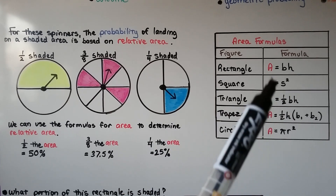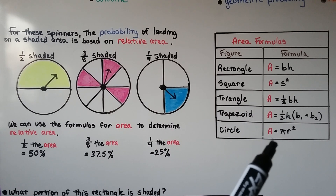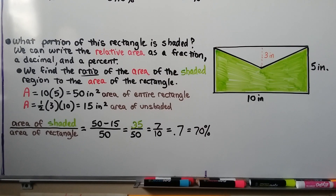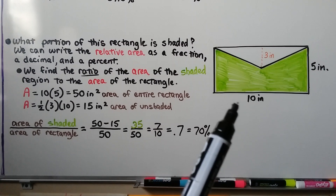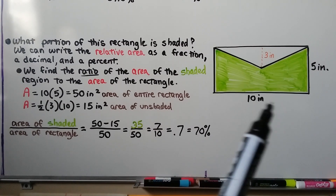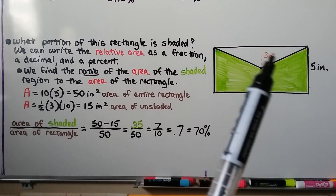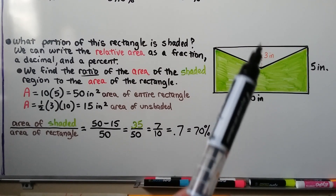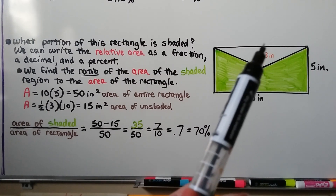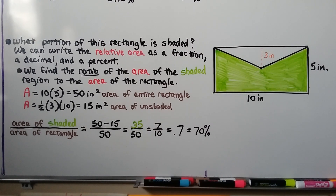Here are the area formulas and the figures — these are the formulas we would use, which you should be familiar with. Let's look at this diagram. We have a rectangle with a length of 10 inches and a width of 5 inches, and there's an unshaded triangular part with a height of 3 inches. What portion of this rectangle is shaded? We can write the relative area as a fraction, a decimal, and a percent.